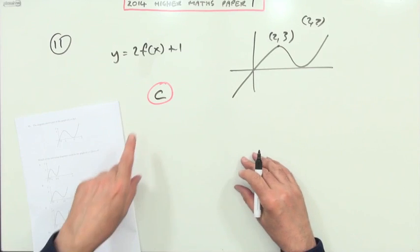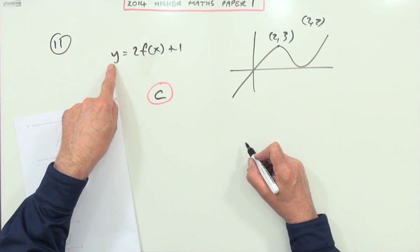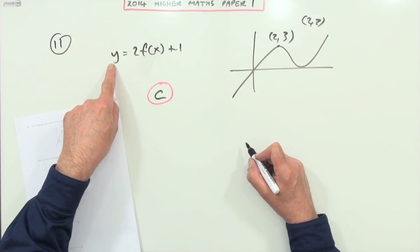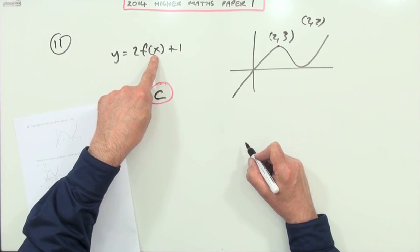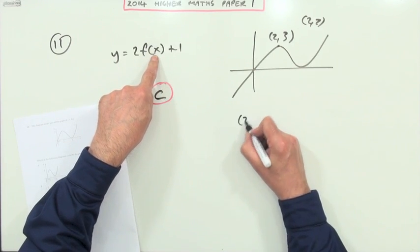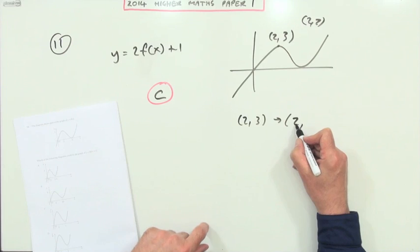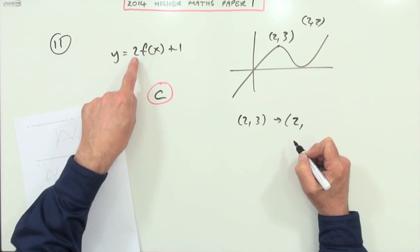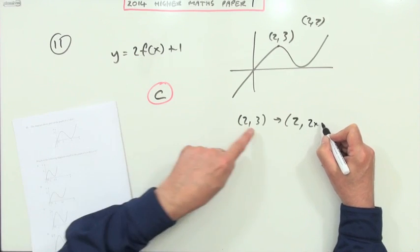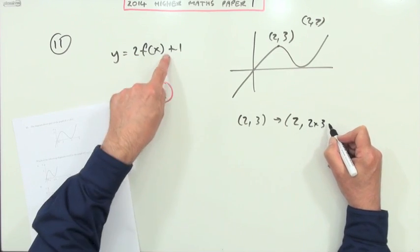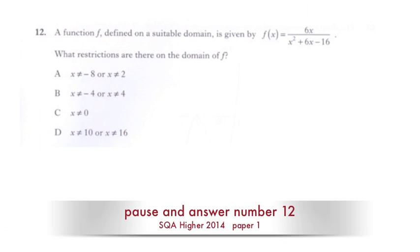Or doing it arithmetically: the new y-coordinate is two times the old y-coordinate plus one. Inside the bracket there's no change, so the x-coordinate stays as x. For the point (2, 3): the x stays as 2, and the new y is two times three plus one, which gives seven. So again you get (2, 7).